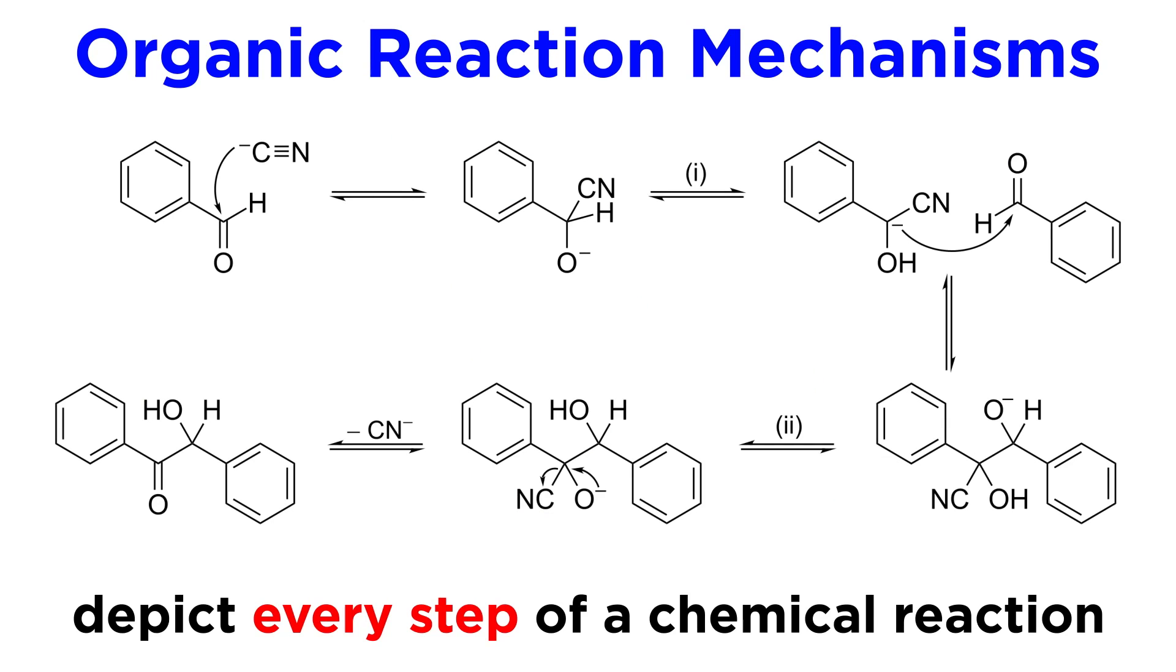Again, a mechanism is a depiction of a chemical reaction with every step shown. A chemical reaction, without exception, involves the breaking of at least one chemical bond, or the formation of at least one chemical bond, and usually several of both.